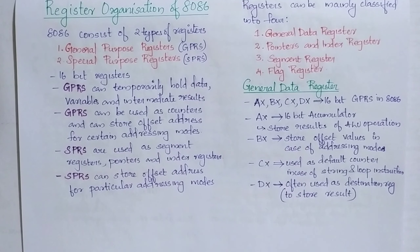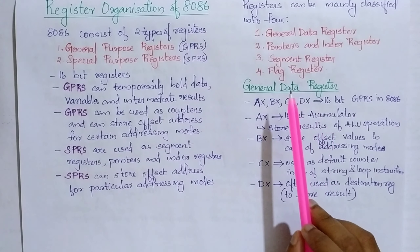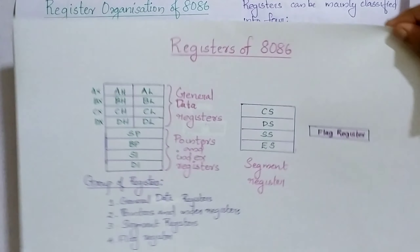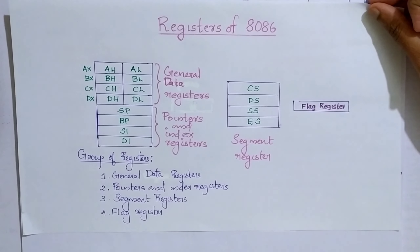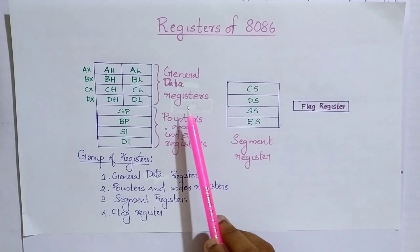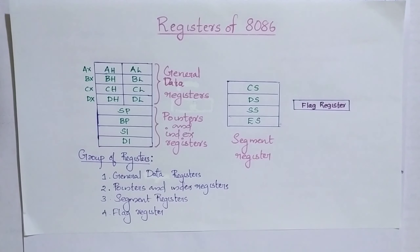Mainly, we can divide the registers into four categories: first is the general data register, second is the pointers and index registers, third is the segment register, and fourth is the flag register. Looking at the figure of the registers, the general data registers, pointers and index registers, and flag registers are in the execution unit, while the segment register is in the bus interface unit.